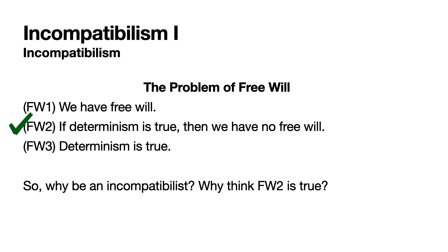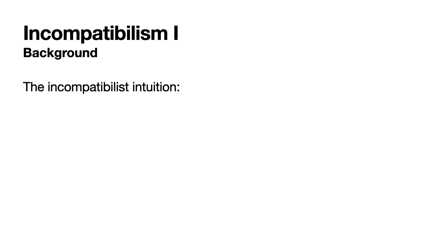Today we're going to talk about stepping back from either specific version of incompatibilism. Why be an incompatibilist at all? Why think that determinism's truth rules out freedom? I think it's easy to articulate a rough intuition — what we can call the incompatibilist intuition. And this isn't really an argument exactly; it has the makings of an argument, but it's more like a feeling or a sense that determinism and the thesis that I have free will are in tension somehow.